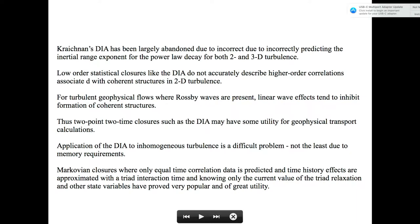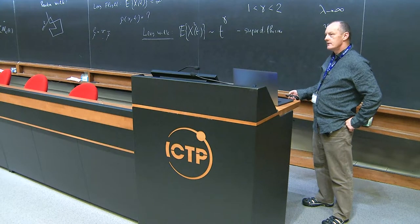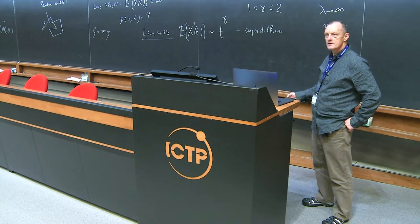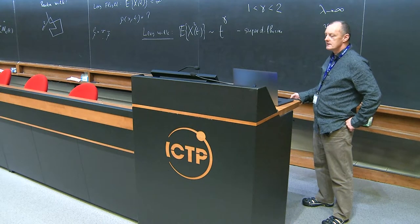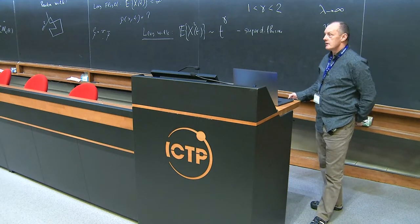Kraichnan's DIA has largely been abandoned over recent years due to the problem of incorrectly predicting the inertial range exponent of the power law decay, for both two- and three-dimensional turbulence. These lower-order statistical closures don't accurately describe the higher-order correlations associated with the formation of coherent structures in 2D turbulence. But for turbulent geophysical flows where Rossby waves are present, these linear wave effects can inhibit the formation of those coherent structures, so there's some utility to applying two-time closures such as the DIA for geophysical transport calculations.